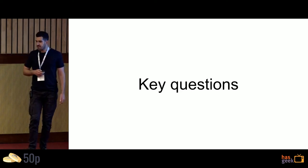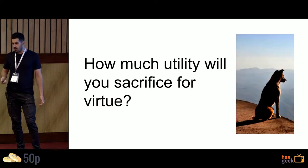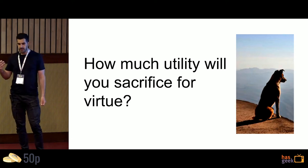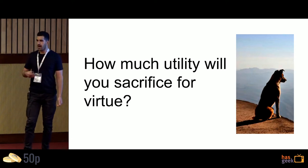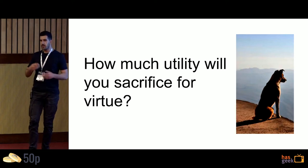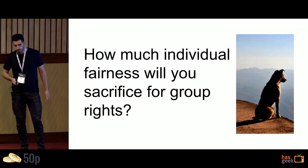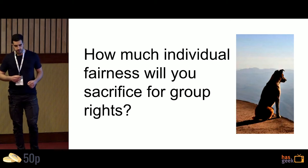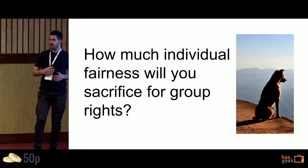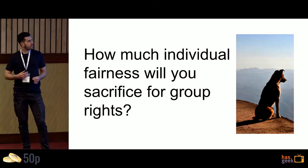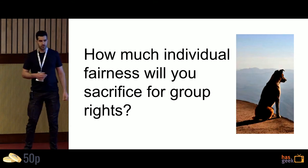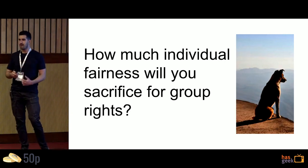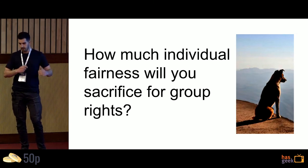The key questions when considering ethical issues are: how much utility are you going to sacrifice for one of these other virtues? How much utility will you give up for fairness? How many extra defaults or extra fraud will you allow in order to avoid using a protected trait? Or how much individual fairness will you sacrifice to get more group fairness? These ethical principles will come into conflict. The key point is you have to answer these tough philosophical questions before you can even start building a fair algorithm, because you have to define what fair means and how much of one thing you'll give up for another.